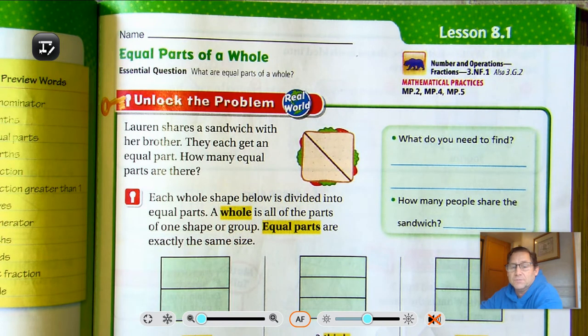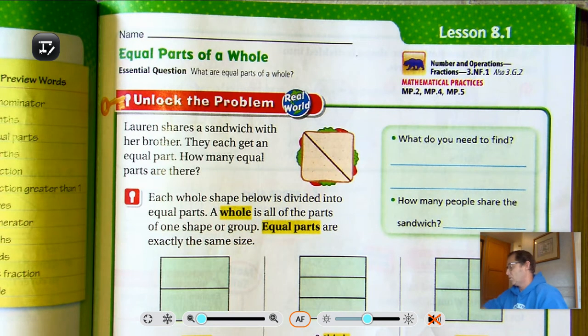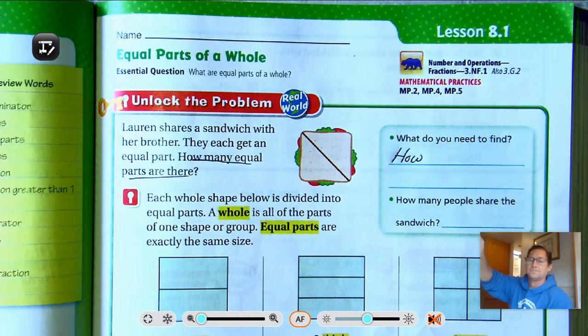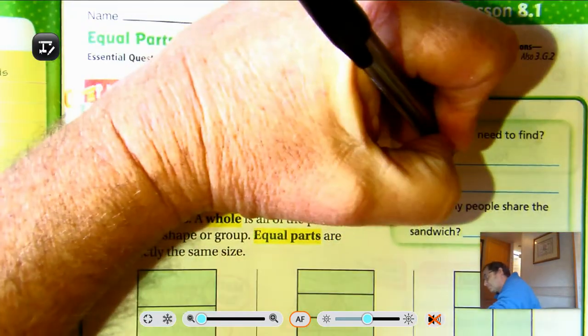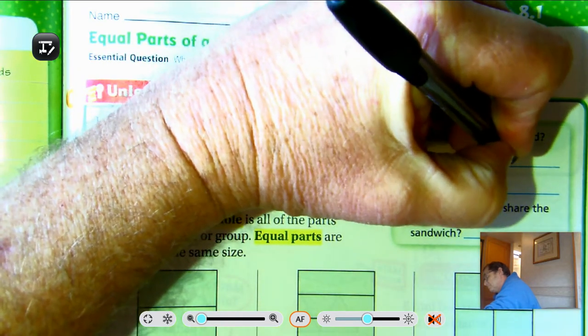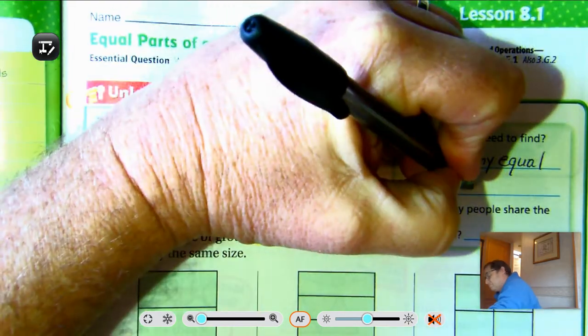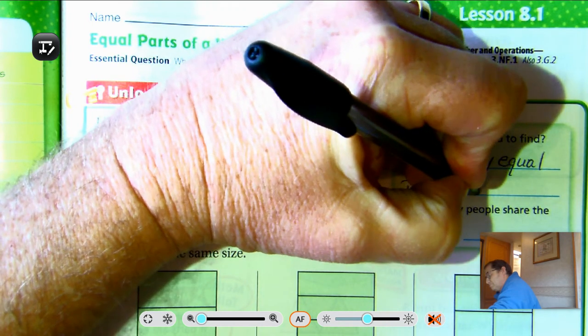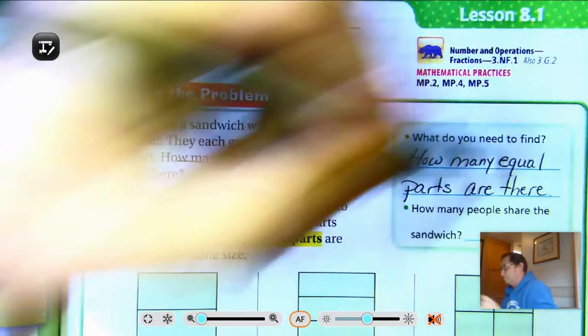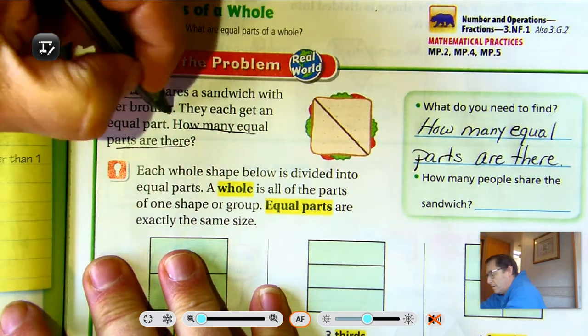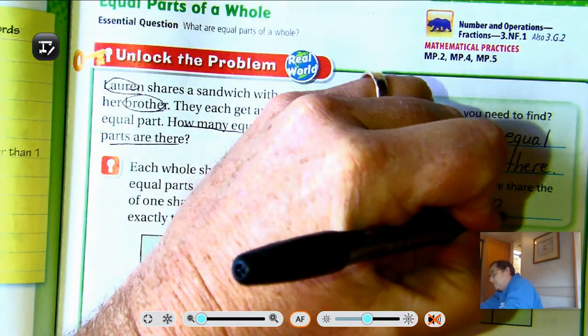Alright, so let's look at the Unlock the Problem. Lauren shares a sandwich with her brother. They each get an equal part. How many equal parts are there? So what do we need to find? How many equal parts there are? How many people share the sandwich? Lauren and her brother. So there's two. Two people are sharing the sandwich.